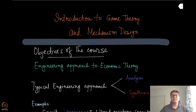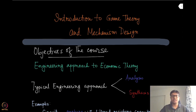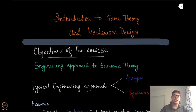Now what is Mechanism Design? It is often called the Engineering Approach to Economic Theory, and this is defined by Eric Maskin, who is one of the recipients of the 2007 Nobel Prize in Economics for his contribution in Mechanism Design Theory. And indeed Mechanism Design is an Engineering Approach.